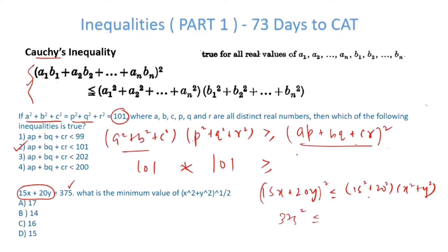Now this is nothing but 375. So 375 squared is less than equal to 15 squared plus 20 squared is nothing but 25 squared into x squared plus y squared.